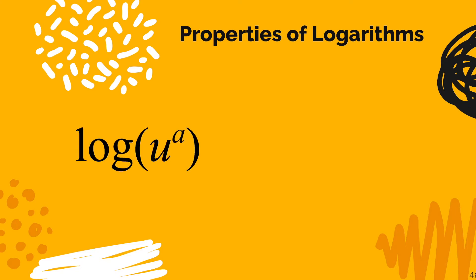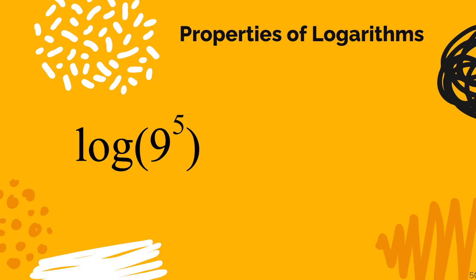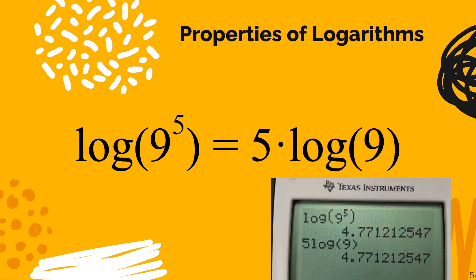So here's the property of logarithms for powers. When you have log u to the a power that's going to be equal to a times log of u where a is a coefficient now instead of an exponent. Now let's take a look at a numerical example log of 9 to the fifth power. This ought to be the same thing as 5 times the log of 9. So we can go into our calculator and type it in and you see that indeed they are the same decimal.